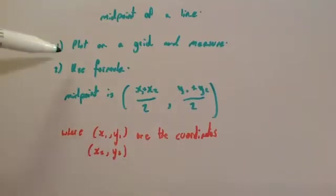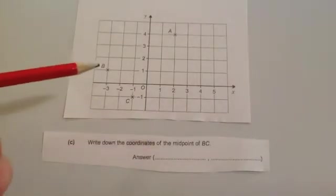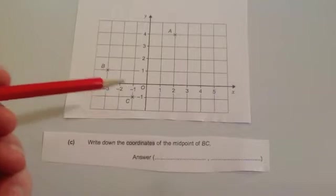Let's look at two questions. I'm going to do the first one using the first method and the second one using the second method. So the question says, write down the coordinates of the midpoint of BC. Actually, even just by looking at this, you can see where the midpoint is going to be.